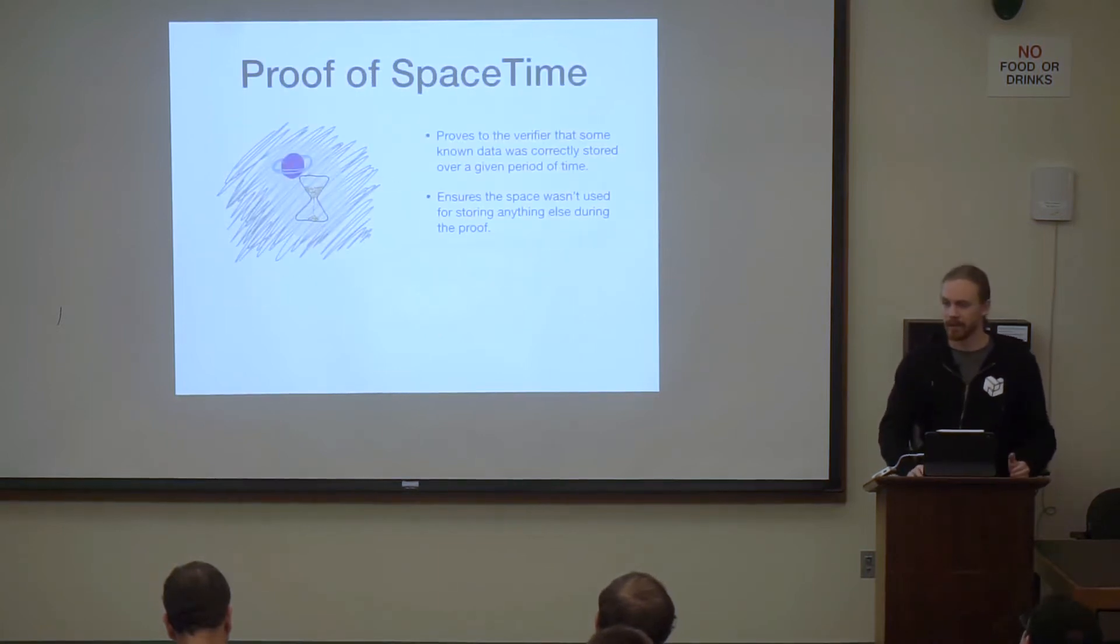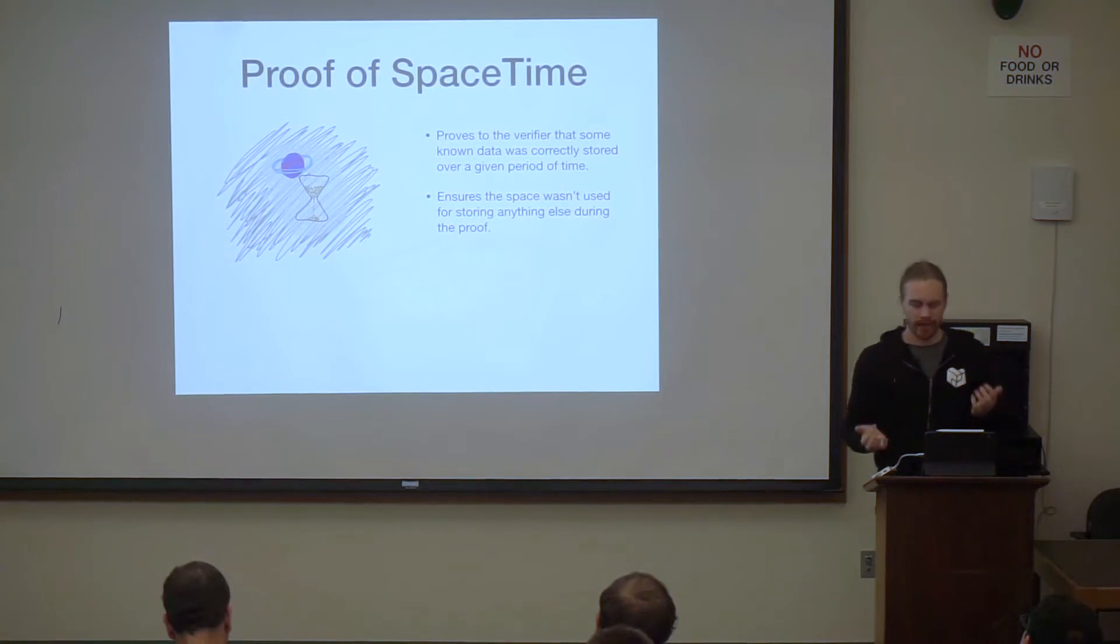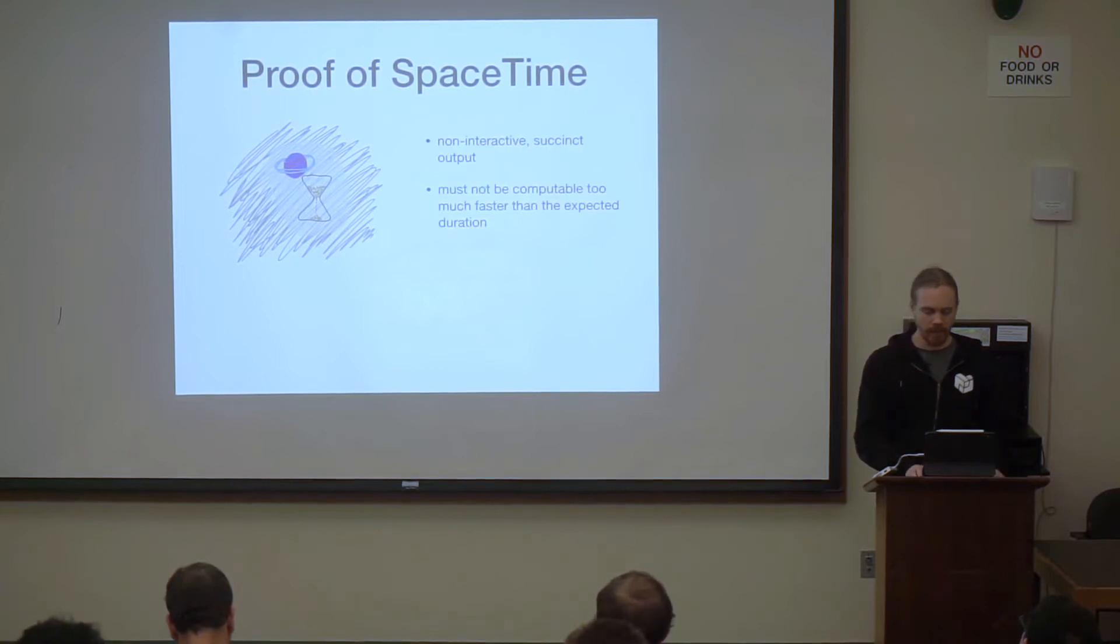The next one is proof of space-time. So this is kind of like the other side of this. So this proves to the verifier that some known data was correctly stored over a given period of time. So the main thing we're trying to prove here is that the space that you're claiming to have wasn't reused for some other purpose during the time period that you're proving it to us. It has a non-interactive succinct output, and it must not be computable too much faster than the expected duration.